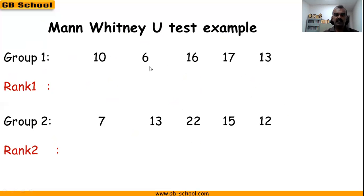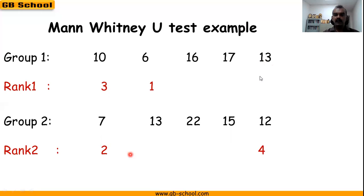The lowest one is 6, so it gets rank 1. Then 7 is 2nd, 10 is 3rd, 12 is 4th. For 13, we have 2 values, so we add the 5th and 6th ranks and divide by 2: that is 5 plus 6 divided by 2, which is 11 divided by 2, giving 5.5 — here also 5.5.